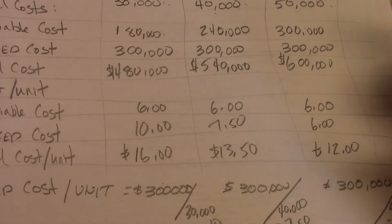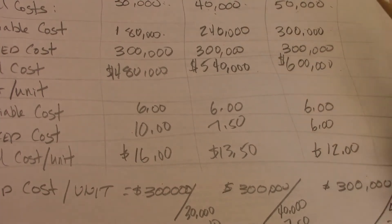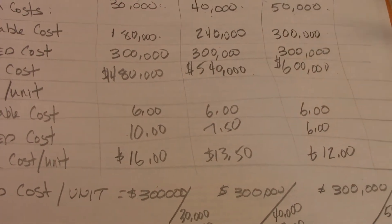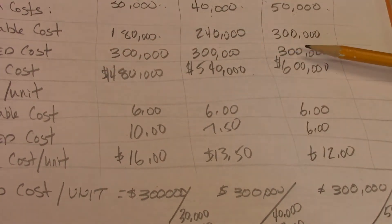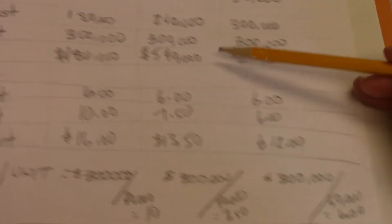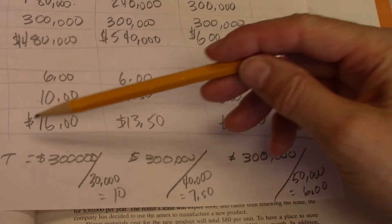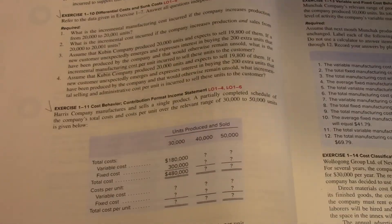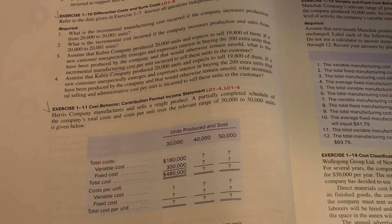So that helps me answer a lot of questions. If I make these different amounts of units, what will my total cost be? And what is my cost per unit so that if I needed to know should I make more units? I've got this answer right here.